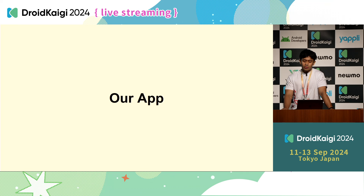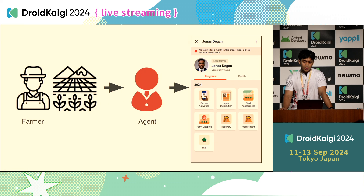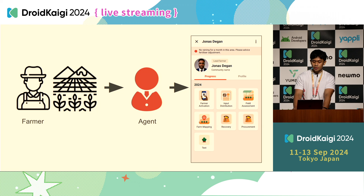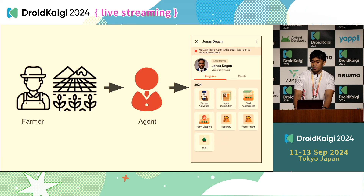Before we move on to how we implement our offline-first app, let me explain what our app is, what it's for, how it works, and who it's for. Our app is not used by farmers directly because not every farmer has a phone. We have agents as a middleman between farmers and our systems. When a farmer does something, they tell the agent, and the agent makes a record in our app. Basically, the agent is our user.